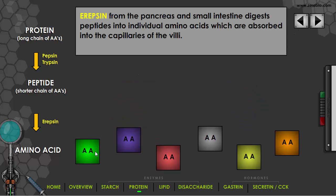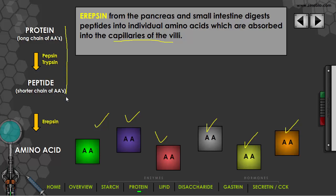We now have individual amino acids — the smallest breakdown products — and these are absorbed into the capillaries of the villus. So we went from proteins, all the way through peptides, all the way down to amino acids.